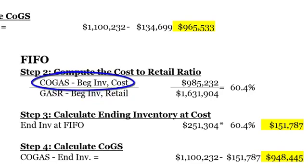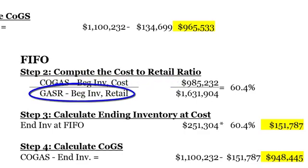So I take my cost of goods available for sale minus my beginning inventory at cost. That gives me this $985. I take my goods available for sale at retail, I take out the beginning inventory at retail. That gives me that $1,631,904, I divide that, I get 60.4%. Really similar to what we saw in our average cost because beginning inventory wasn't a huge piece of what we were doing.